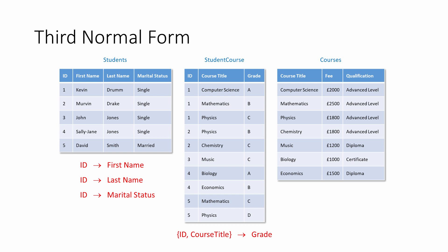So what's a transitive functional dependency? These are not allowed in third normal form. Let's add some more data to the courses table to help make this clear.